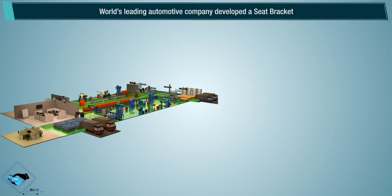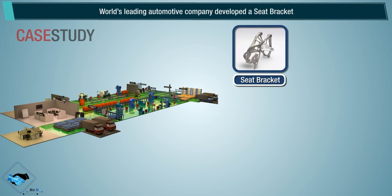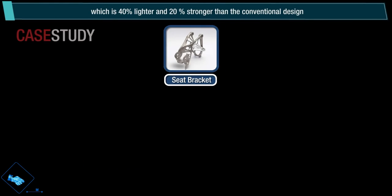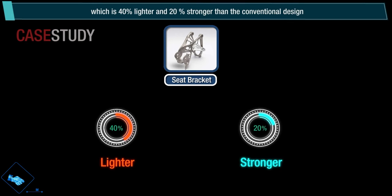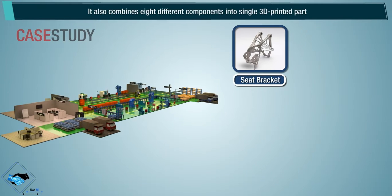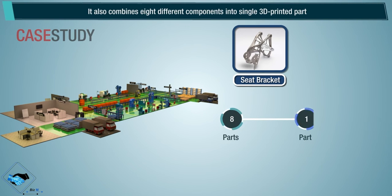A world-leading automotive company developed a seat bracket that is 40% lighter and 20% stronger than the conventional design. It also combines 8 different components into a single 3D printed part.